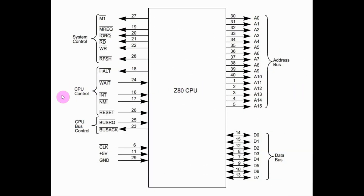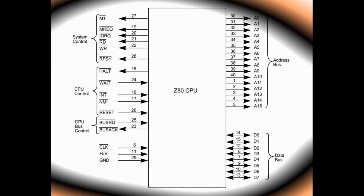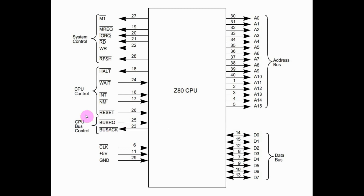Next we have the CPU control lines, which includes HALT, WAIT, INTERRUPT, non-maskable interrupt, and RESET. Finally, we have the CPU bus control lines, which includes the bus request, which is an input signal generated by a host device such as a peripheral, to have access to the CPU bus. And the CPU will reply with a bus acknowledgement signal.